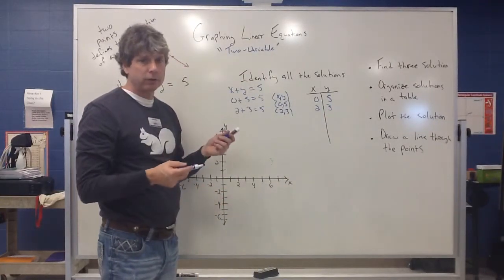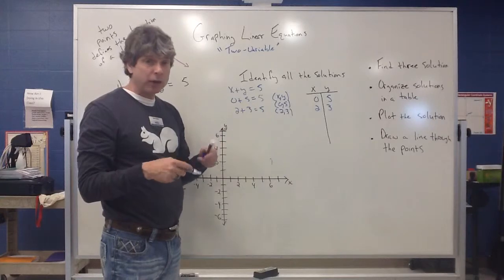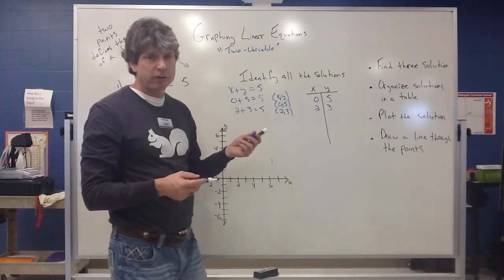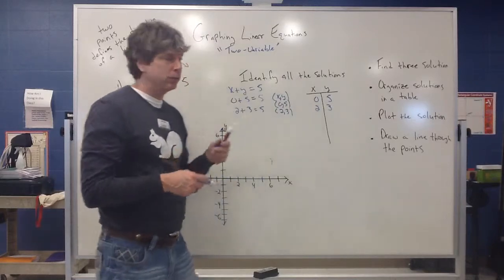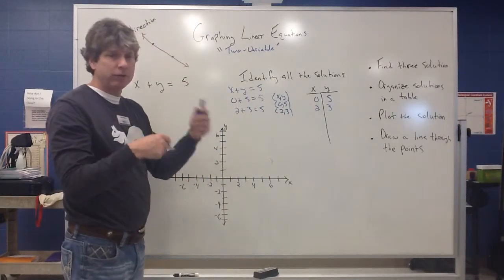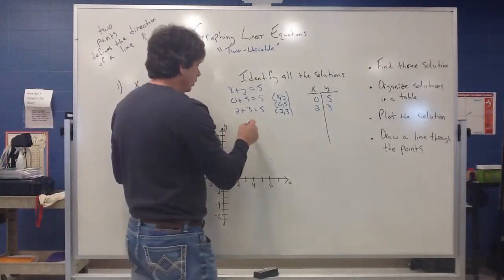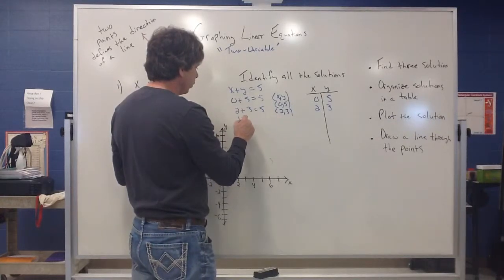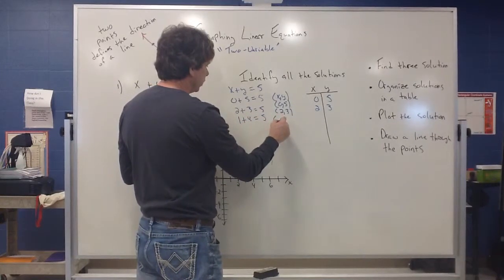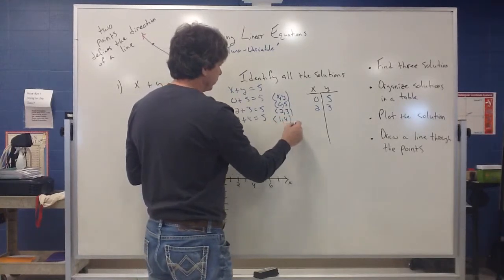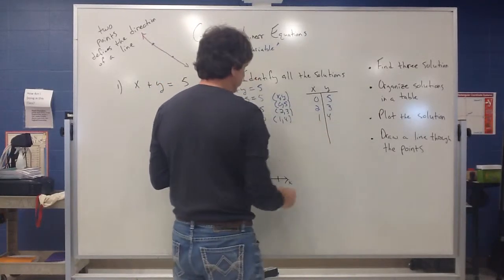So notice that with these types of equations, we're getting more than one solution. Remember before when we solve for x, we got x equals a specific number. But now when you put two variables involved, there's going to be a few more choices involved here. So also pick up on this, I got one plus four is five. So we pick up one, four is an ordered pair. So I can write that in my table.